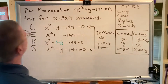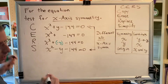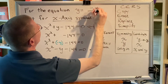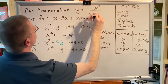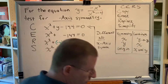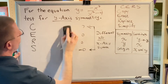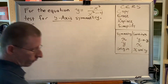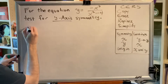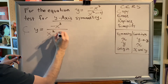Let's try another problem. Our next equation is y equals a fraction — the numerator is negative x cubed, and the denominator is x squared minus 4. This time, we're going to test for y-axis symmetry. We'll use the same method, CERS. First, we make an exact copy: y equals negative x cubed over x squared minus 4.